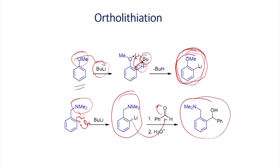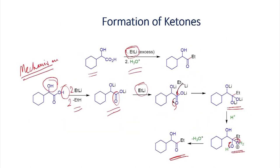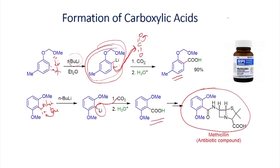If you remember the earlier reaction where a carboxylic acid reacts with alkyl lithium to give further reaction to a ketone, in this case the aryl lithium undergoes addition reaction to give a salt which does not undergo further reaction with the aryllithium, because aryllithium is less reactive compared to alkyllithium. Therefore this salt remains; when you do the workup you will be able to generate the carboxylic acid as the product.